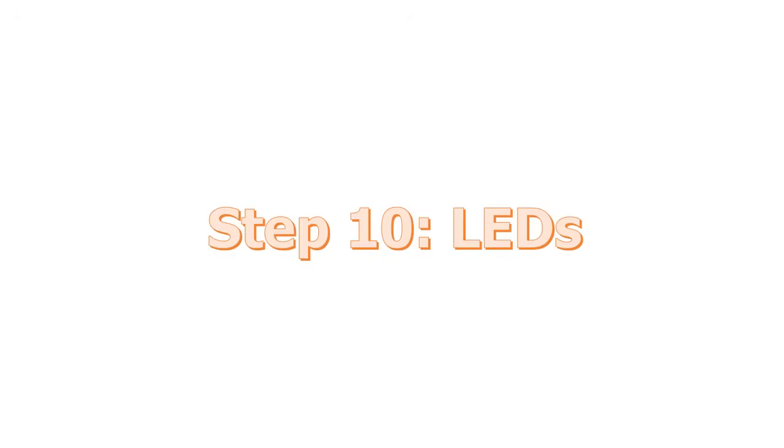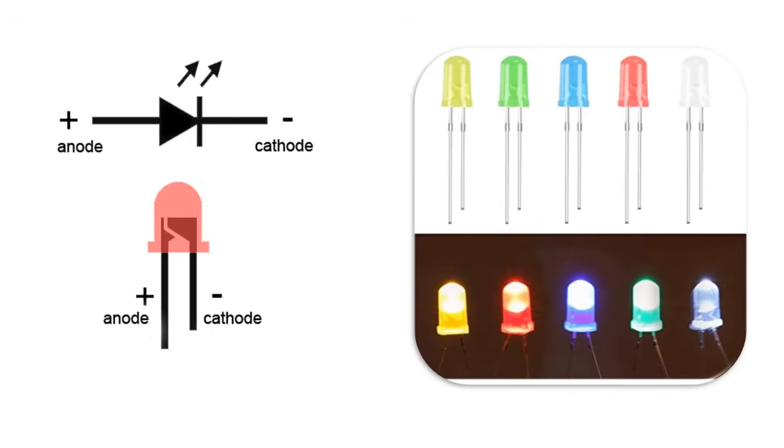Step 10. LEDs. LED stands for a light emitting diode. It is basically a special type of diode that lights up when electricity passes through it. Like all diodes, the LED is polarized and electricity is only intended to pass through in one direction. LEDs will show up in a schematic as a diode symbol with lightning bolts coming off of it, to indicate that it is a glowing diode.